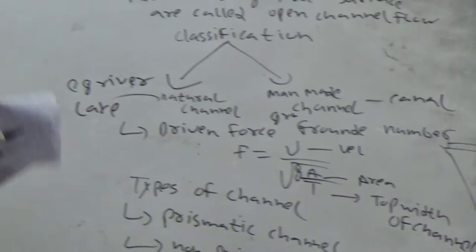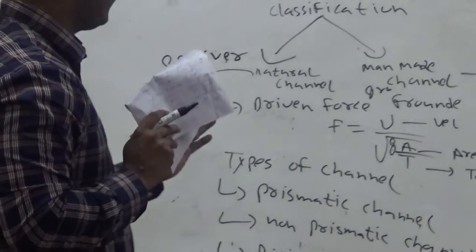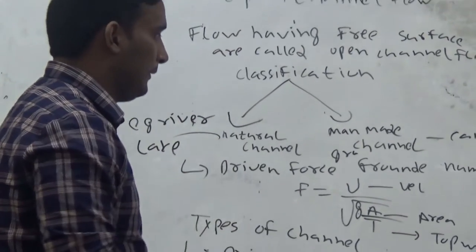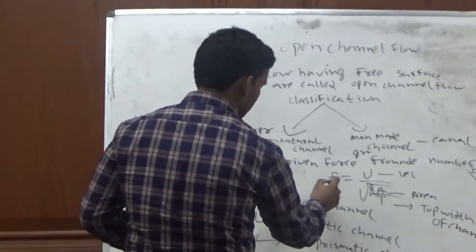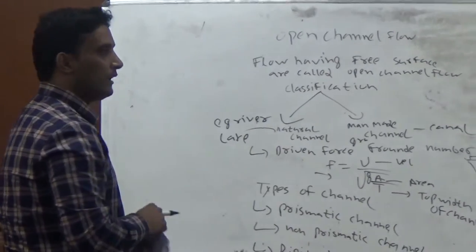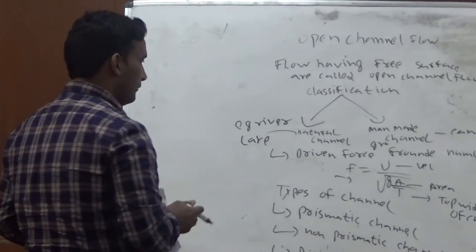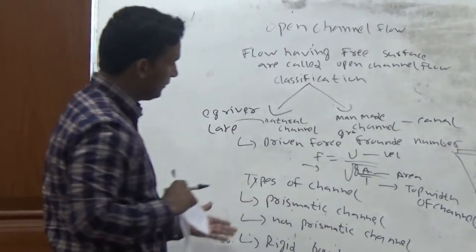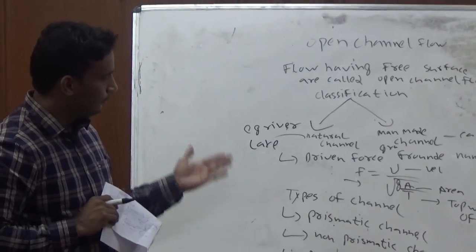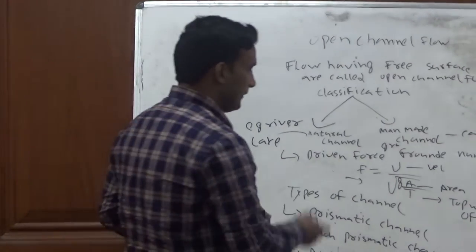This is a very important parameter for open channel flow and this parameter is used for classification of open channel flow. Now, types of channels are prismatic channels and non-prismatic channels.